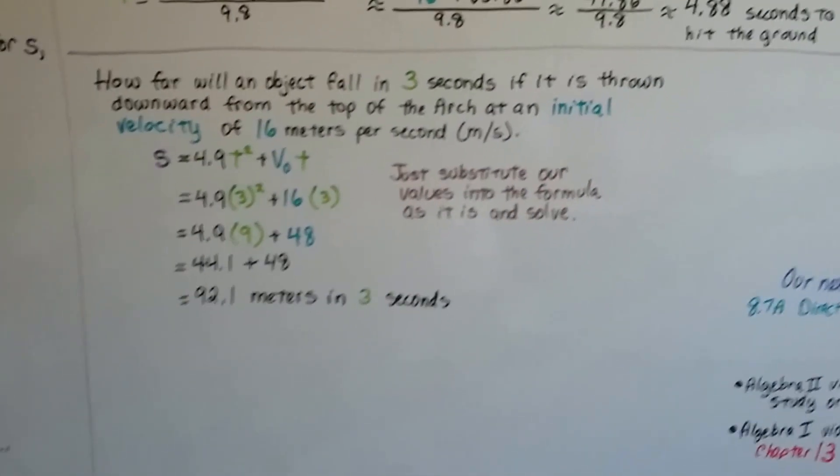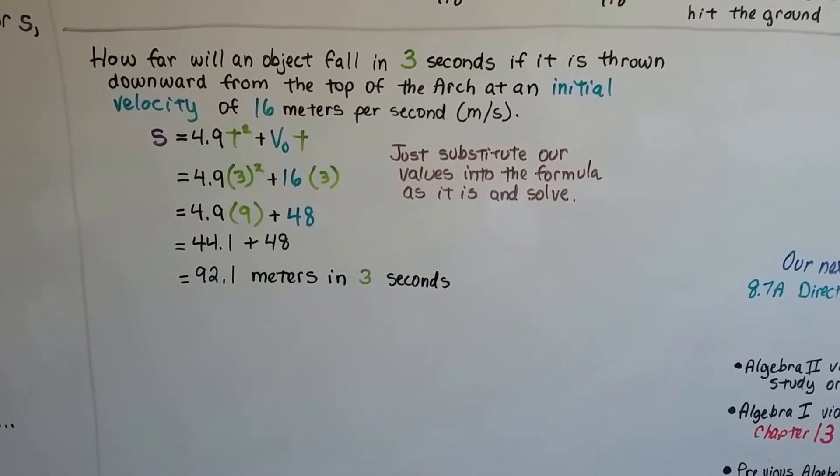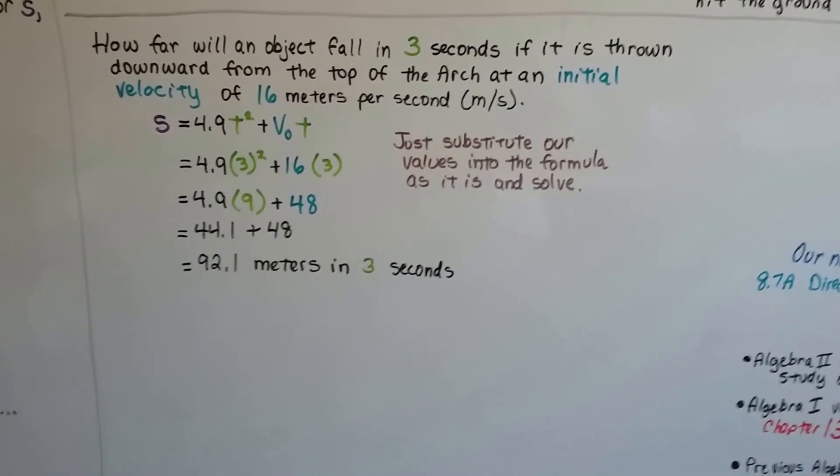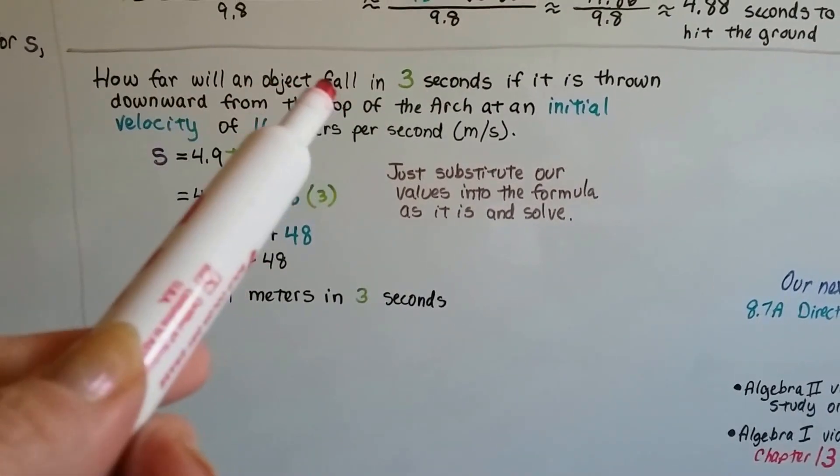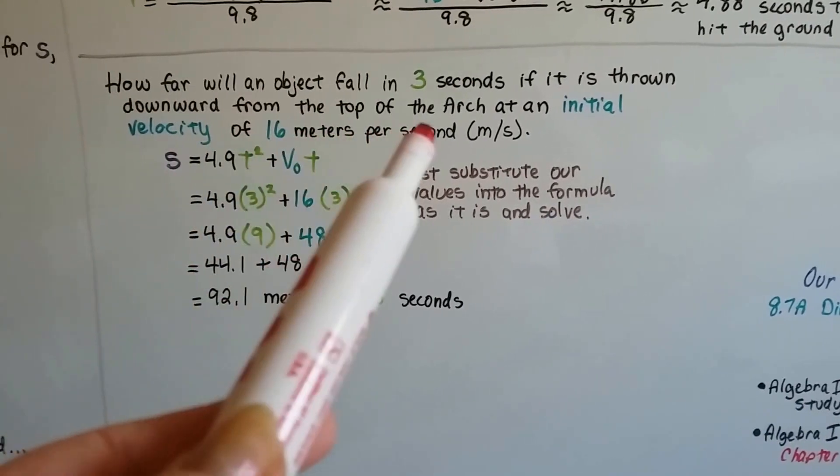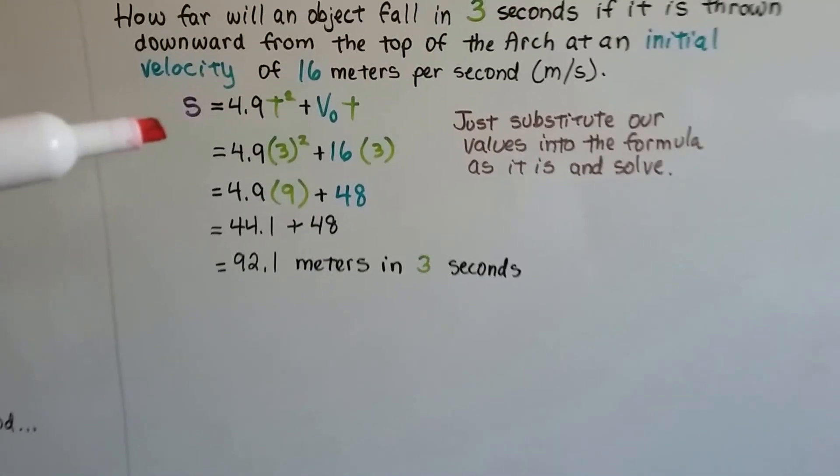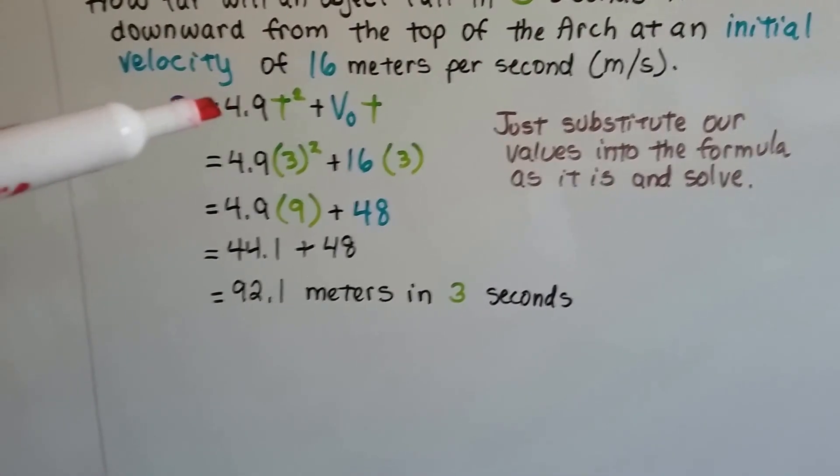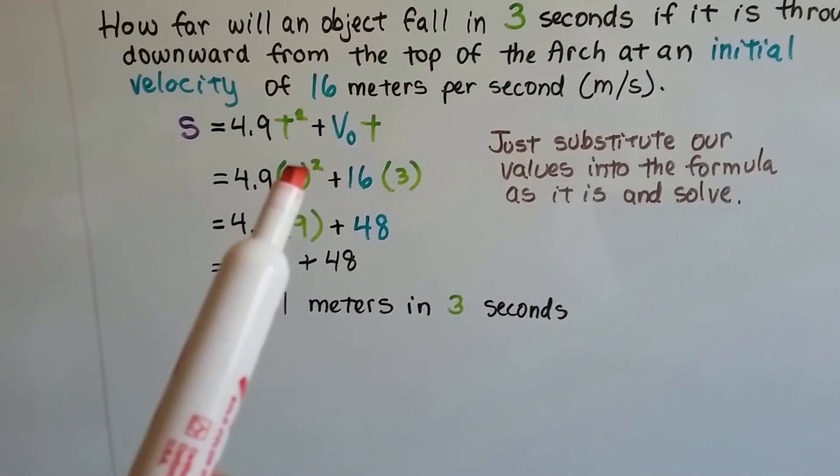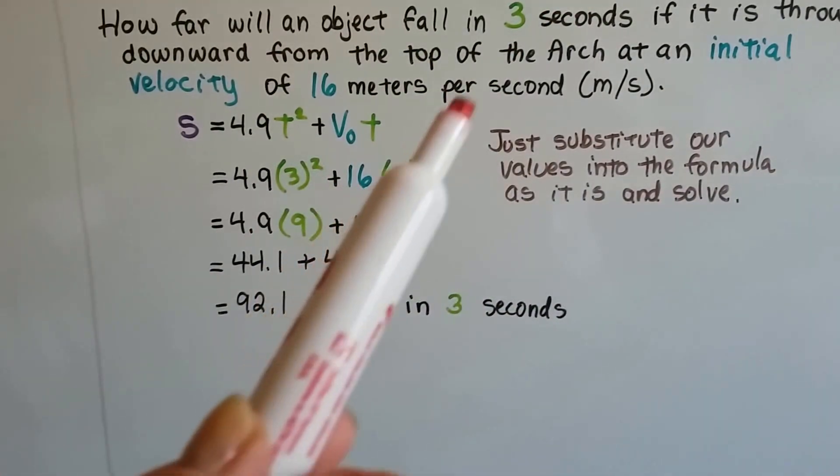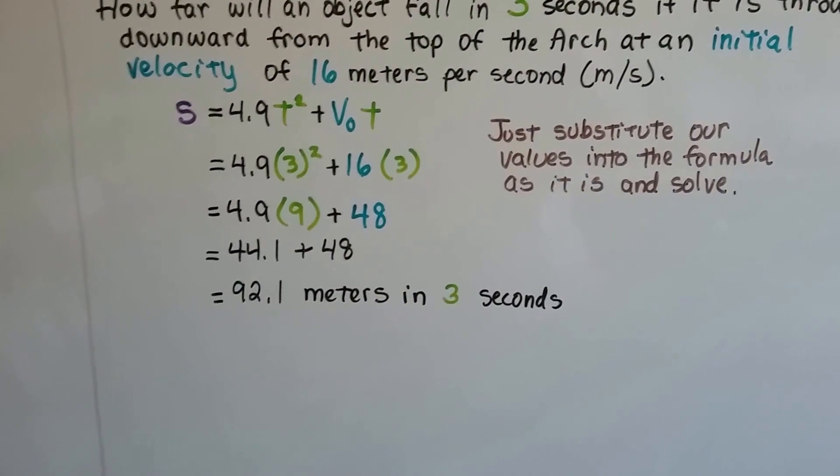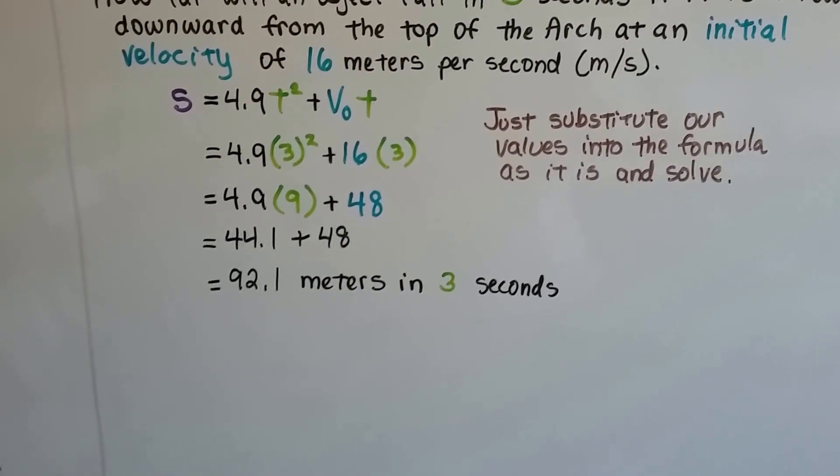Let's try this one. How far will an object fall in 3 seconds if it is thrown downward from the top of the arch at an initial velocity of 16 meters per second? So now it's asking how far it's going to fall. Now we're looking for the meters. We know it's 3 seconds. We know it's 16 meters per second. Here's our formula: s equals 4.9 times t squared plus v sub 0 t. We know t is going to be a 3. We know that initial velocity is going to be a 16. We don't need to change this formula at all. All we have to do is just substitute our values into the formula as it is and solve.